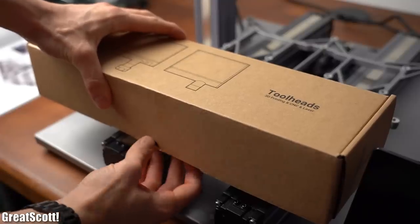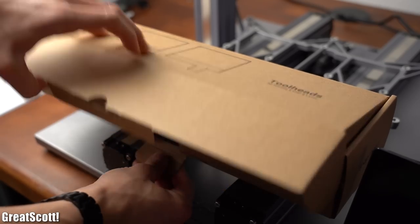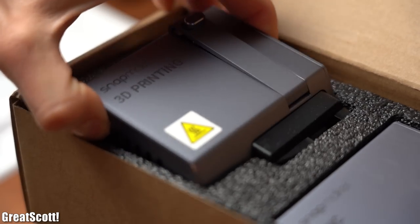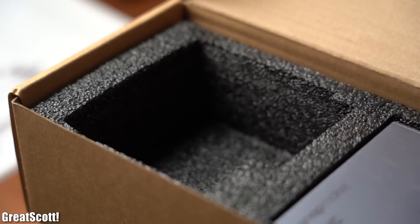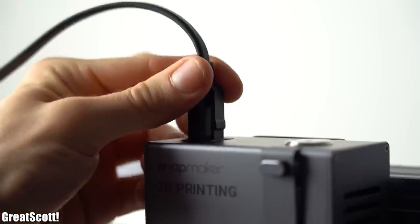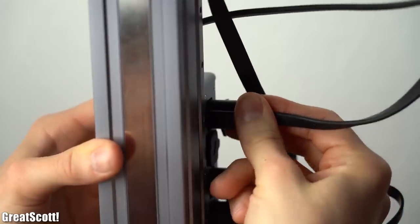And after only one hour into the assembly I was already at the point to choose one tool head and I started with the 3D printing one. So I screwed it to the linear rail and plugged a wire into it which I then connected to the controller.